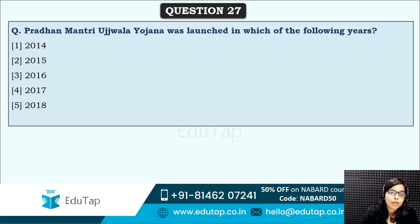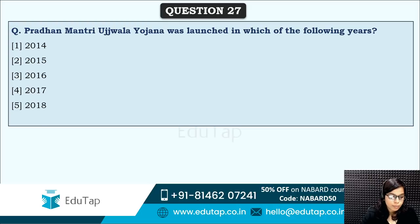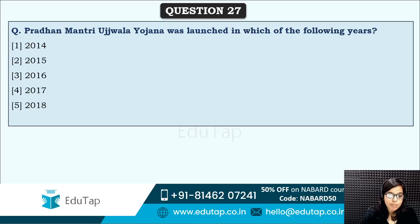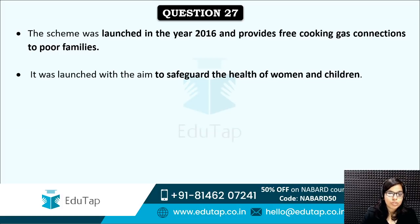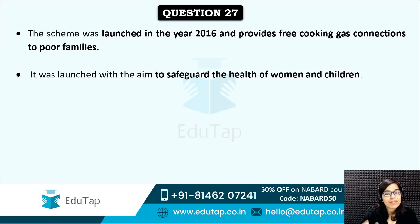Next: Pradhan Mantri Ujjwala Yojana was launched in which of the following years? Questions related to government schemes are very, very important based on previous year trends. The correct answer is option three — 2016. In that year, Pradhan Mantri Ujjwala Yojana was launched to provide free cooking gas connections to poor families so that the health of women and children can be protected.